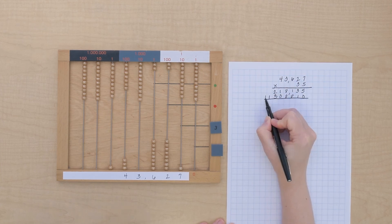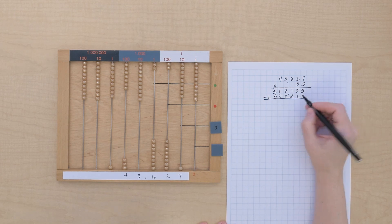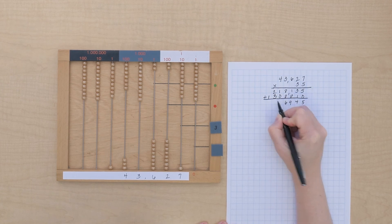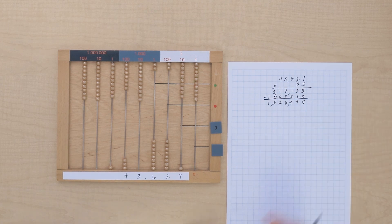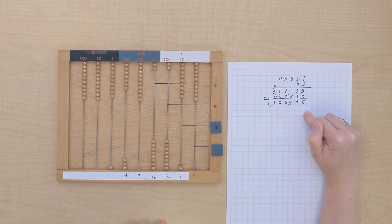So when we have the partial products, we need to add those together to find our final answer. So we've got 5. Wow, so 43,627 times 35 gave us a product of 1,526,945.